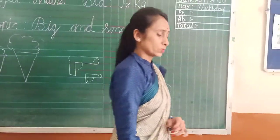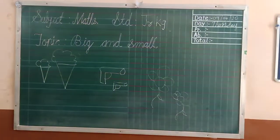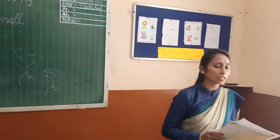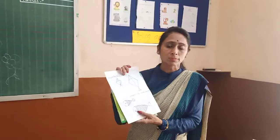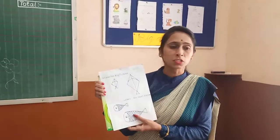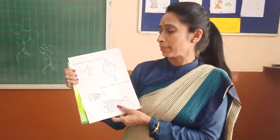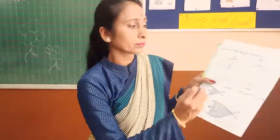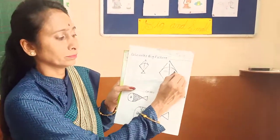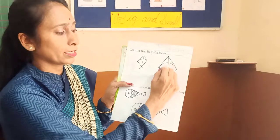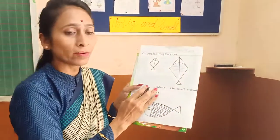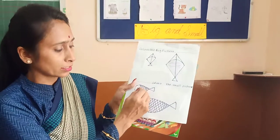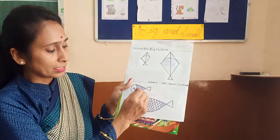Very good. Now I will also give you a worksheet to clear the concept of big and small. Students, identify the big picture and color it — this way. Understand? And the second worksheet: identify the small picture and color it, like this way.